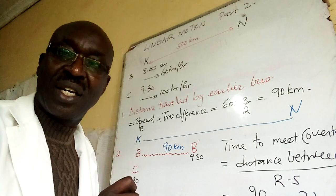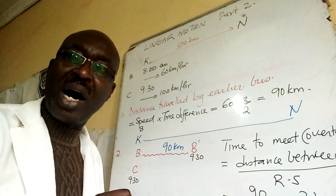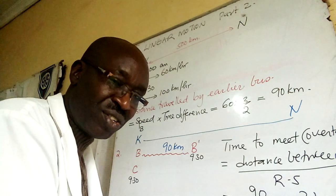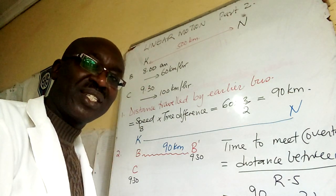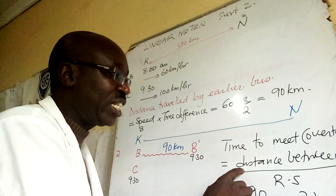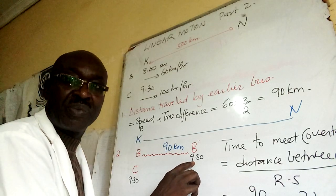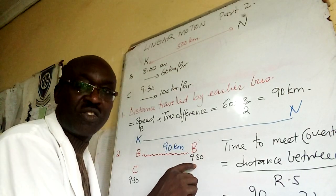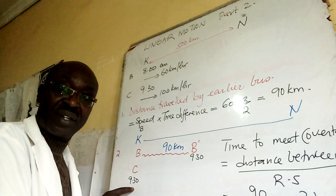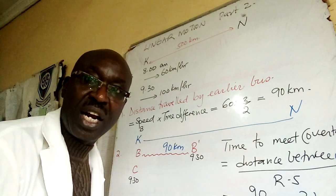Time to meet, time to overtake. At what time was the bus overtaken? At what time did the car Mercedes meet the bus? Time to meet or overtake basically is distance between them at common time. So what is the common time? The bus, the new position of the bus B prime, 9:30. The car is still here. So what is the distance between them? 90, divided by relative speed.